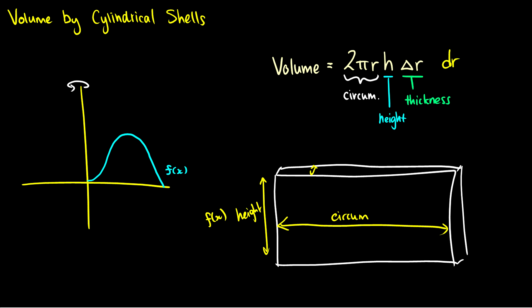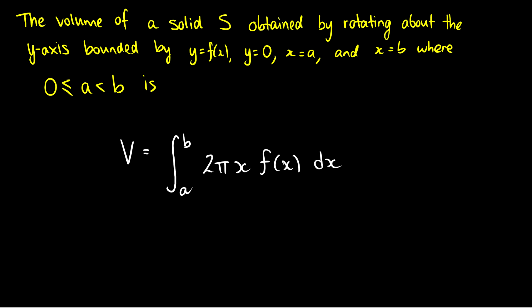The thickness is very small, so it's essentially negligible — we just take a bunch of slices of circumference times height. The formal definition: the volume of a solid obtained by rotating about the y-axis, bounded by y = f(x), y = 0, x = a, and x = b (where b > a), is the integral from a to b of 2πx·f(x) dx. Here 2πx is the circumference, f(x) is the height, and dx is our infinitely thin slice.